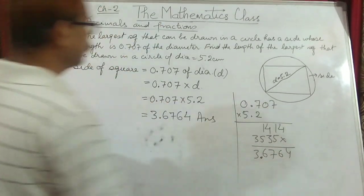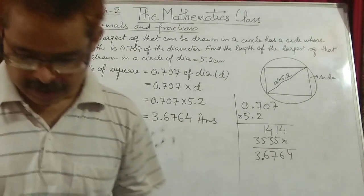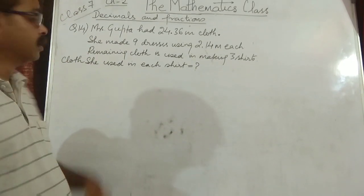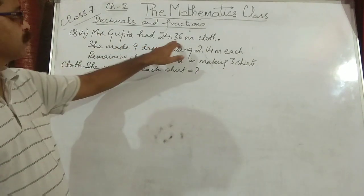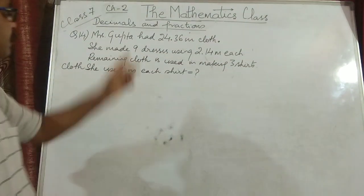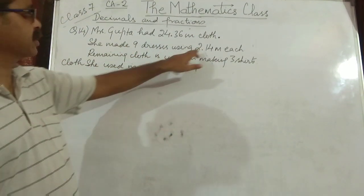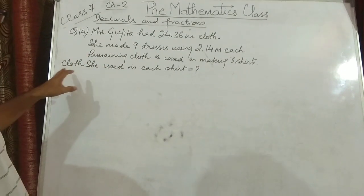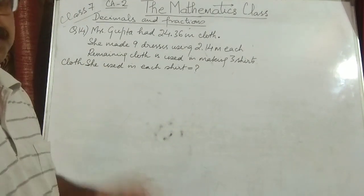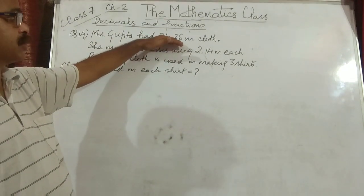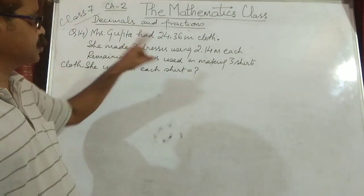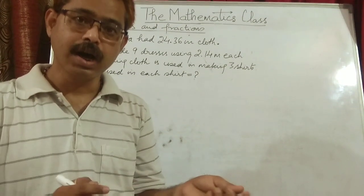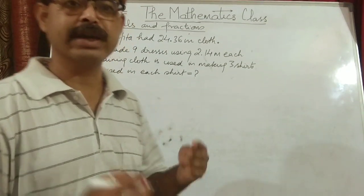The side of the square will be 3.6764. I hope this is understood. Now we move on to question number 14. Mrs. Gupta had 24.36 meters of cloth. She made 9 dresses using 2.14 meters each. The remaining cloth she used in making 3 shirts. First, find how much cloth was utilized in making 9 dresses.